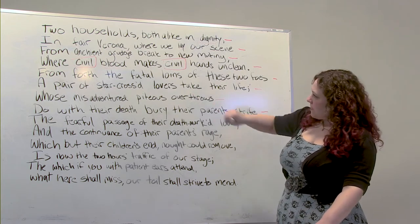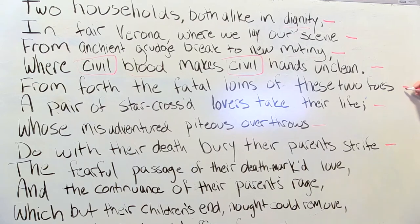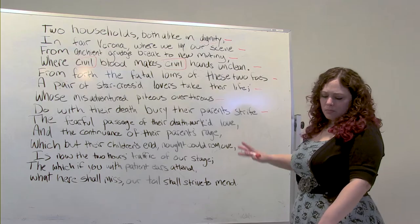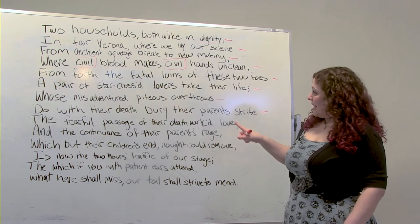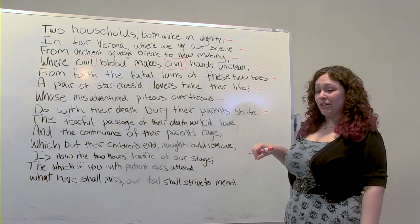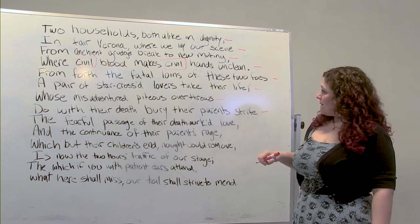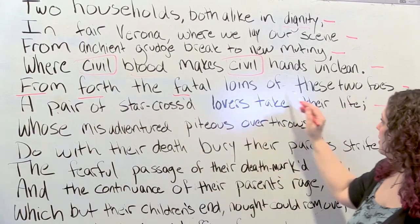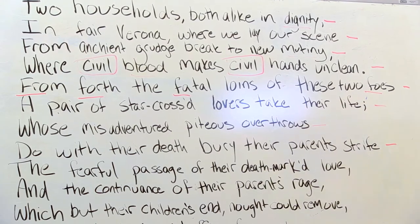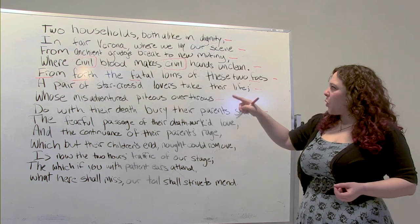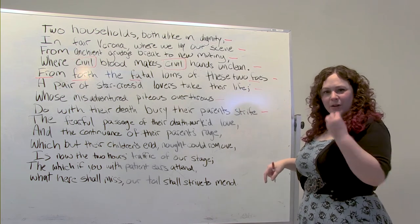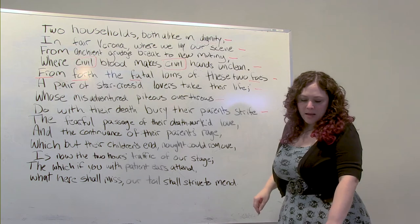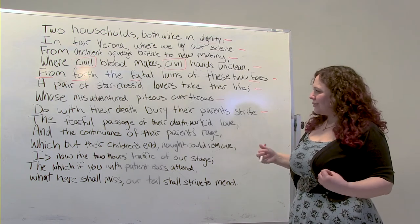'From forth the fatal loins of these two foes' — notice the letter F used over and over: from, forth, fatal, foes. There's a harshness when you say it like that. And 'fatal' is another word that stands out. Play around with the words, play around with the sounds, and you might notice things even further.